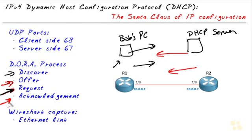In that acknowledgement, it will also contain the options involved, such as the default gateway that Bob's PC can use, the DNS server information, and other details being provided through DHCP.